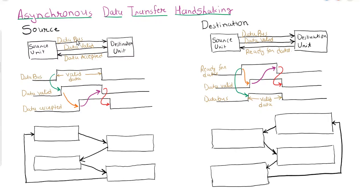First, source will place data on the bus. After placing data on the bus, it will enable the data valid signal.